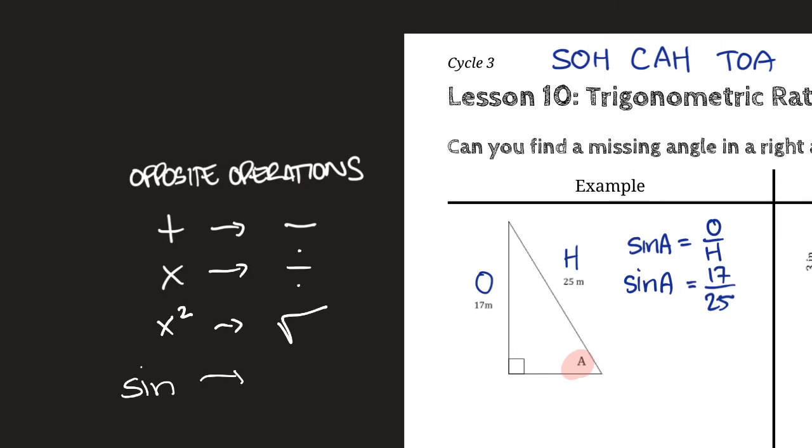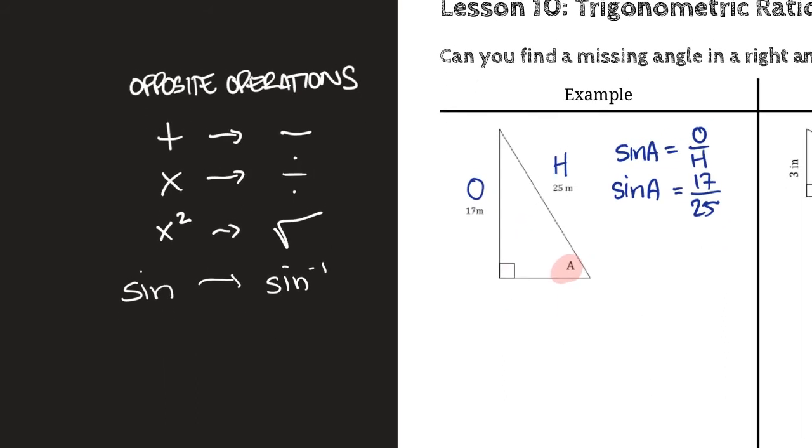So what's the opposite of sine of something? It actually is another button on your calculator. And it's just sine negative one. You might see this button. Often to press this button, you need to do like sine. Press the second function and then the sine button. But that's what it looks like. It's sine negative one.